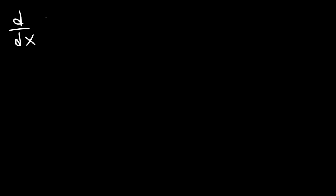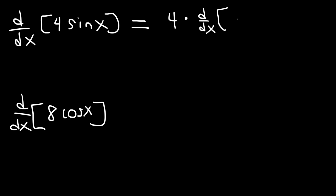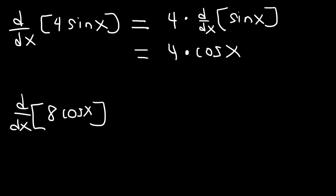With that information, go ahead and try the following problems: what is the derivative of 4 sine x? Using the constant multiple rule, the derivative of 4 sine x is going to be 4 times the derivative of sine x. We know the derivative of sine x is cosine x, so the answer is simply 4 cosine x.